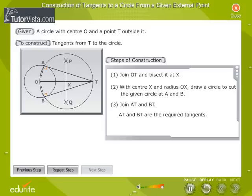Applying the Pythagorean theorem to right-angled triangle OAT, we get AT is equal to root of OT square minus OA square.